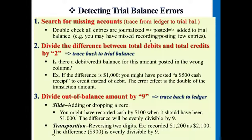At the end, when we summarize all the information in the trial balance — for simplicity, assuming this is the only transaction that occurred — you will see under trial balance that the left side has nothing and the right side has two $500s. This will affect the final balance to have a difference that is actually double the error amount.